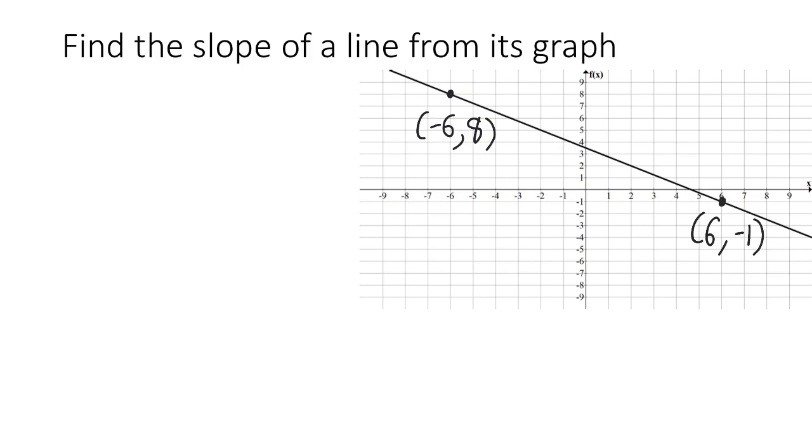Now that we've identified these nice points, we can use the same slope formula that we used in the last example. y2 minus y1 over x2 minus x1. Now in this case, we can take negative 1 as our y2 minus 8 over 6 minus negative 6.